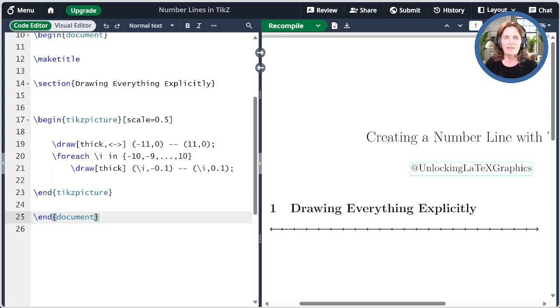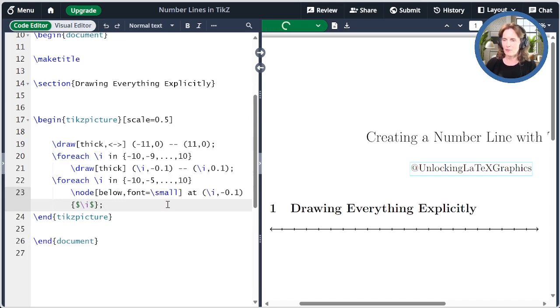Now let's add some labels. If I add them at every tick mark, it'll be too crowded. So I'm just going to add them at every fifth tick mark. So this time I'm going to put in a loop that goes by intervals of 5. And so here we have minus 10, minus 5, dot, dot, dot, 10.